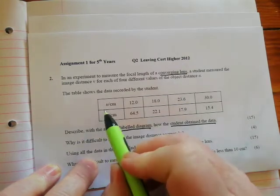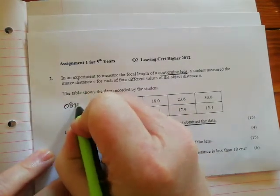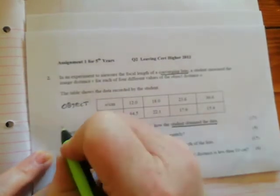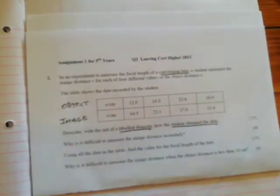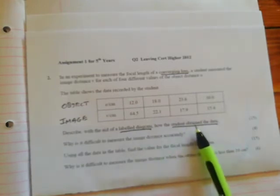What is the data? Well, it's U, which is the object distance, and V, which is the image distance. So, a labeled diagram, and some way of saying how the student got both of these.